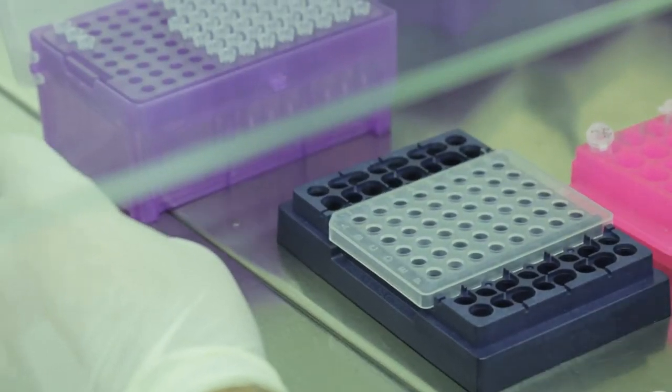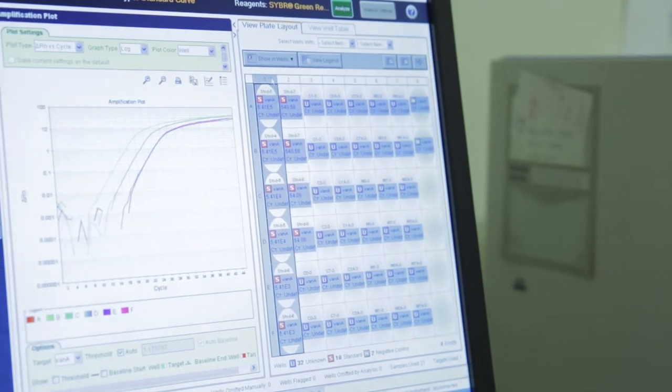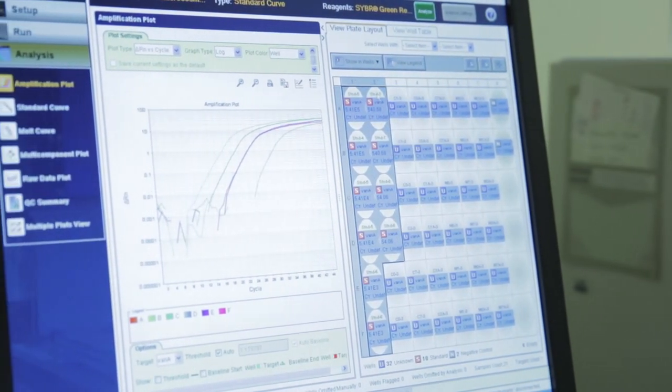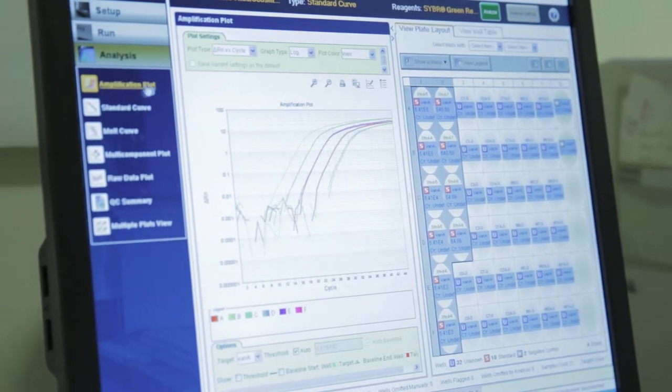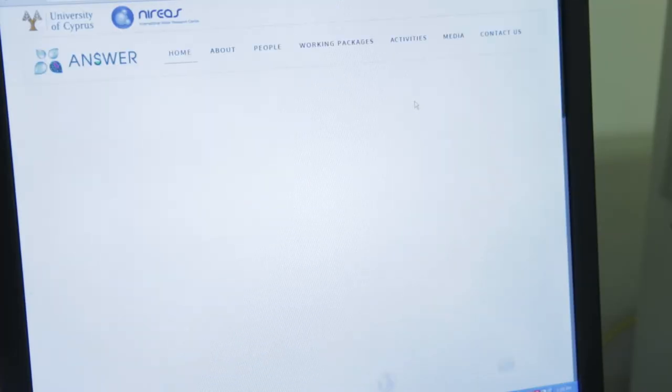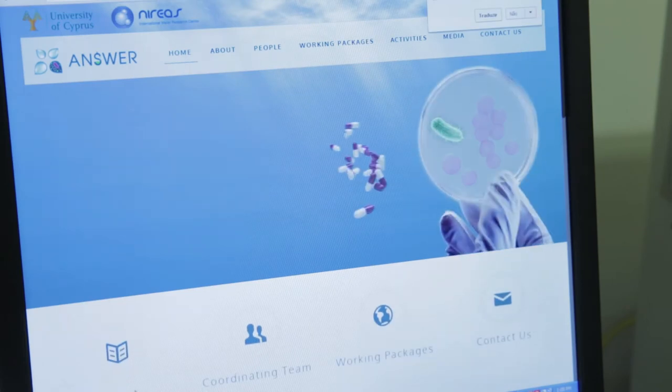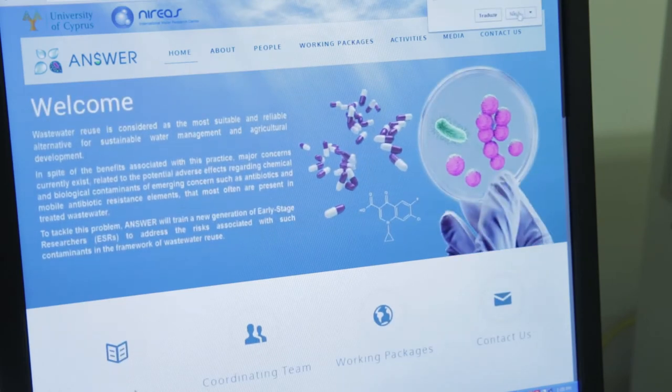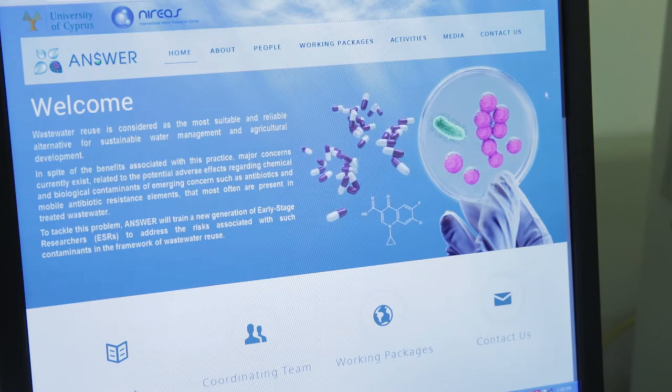This project aims to assess the environmental and possible public health risks associated with antibiotics, antibiotic resistant bacteria and antibiotic resistance genes dissemination, in order to develop risk assessment guidelines to ensure public health and promote safe reuse of treated wastewater for different purposes.